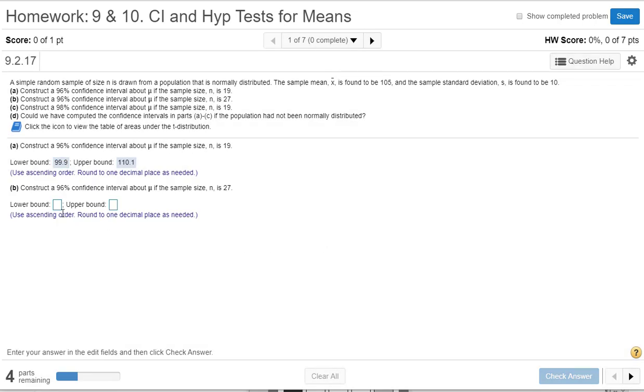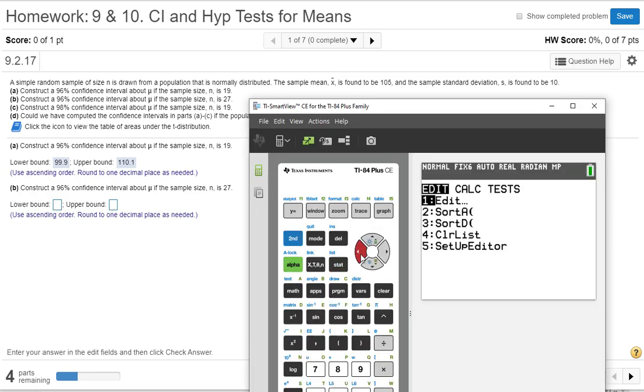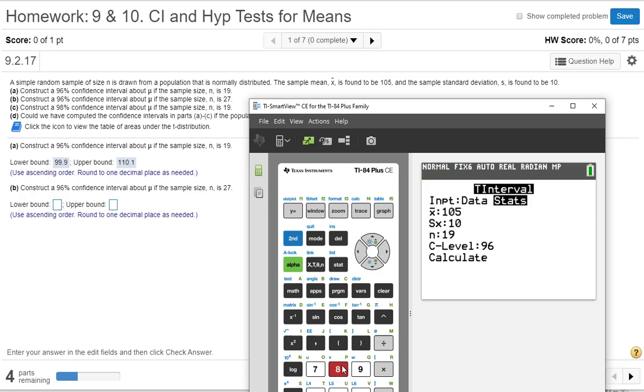Construct a 96% confidence interval about mu if the sample size is 27. So the only thing that changed there was my sample size. So let's go back to test, go down to number eight, the T interval. Okay, so everything else stays the same, except now we're changing this n from 19 to 27. So we're increasing the sample size, everything else stays the same.